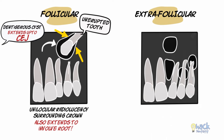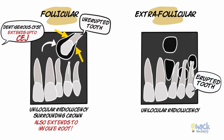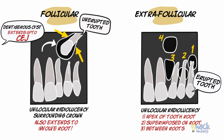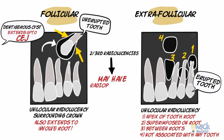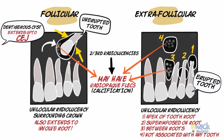The extrafollicular variant is usually a unilocular radiolucency associated with an erupted tooth. The radiolucency may be in close association with the apex of a tooth root, superimposed on the tooth root, present between the roots of adjacent teeth, or rarely may not be in association with any teeth. Two-thirds of the radiolucencies, both follicular and extrafollicular types, may have radiopaque flecks of calcified tissue. The lesion may cause expansion of cortical plates and displacement of adjacent teeth.